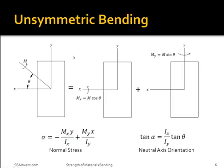In most real-world situations, you're not going to have a force that causes just a moment across the x-axis or just a moment across the y-axis. Instead, that force could generate a moment that is somewhere in between the x and y-axis — in other words, it's a product of the moment across the x-axis and the moment across the y-axis. To solve for this normal stress when your moment is in that type of situation, you would use this equation here. Also, due to the fact that the moment is between your x and y axis, your neutral axis is also going to orient. To calculate the new orientation of your neutral axis, you would use the equation shown here.